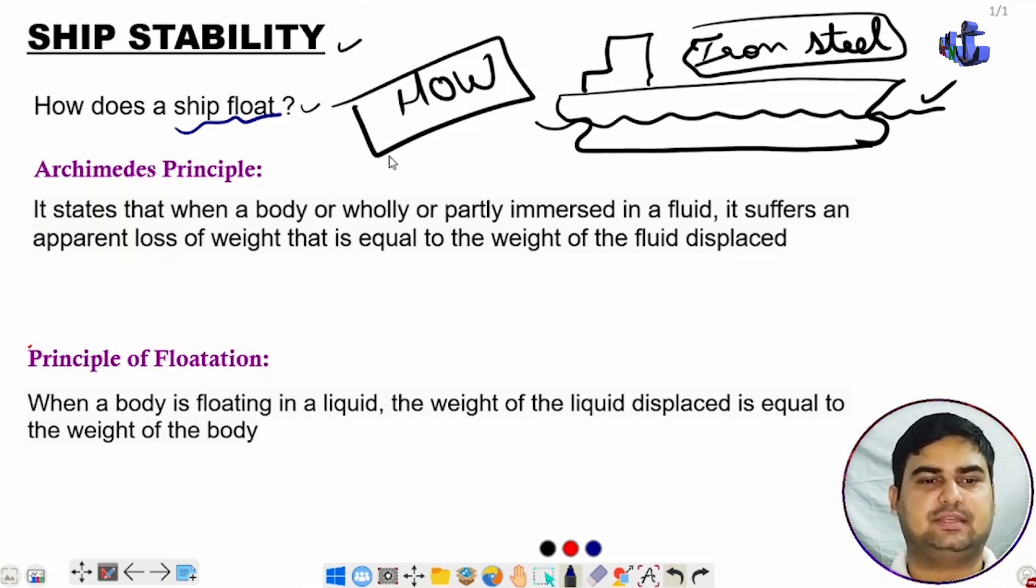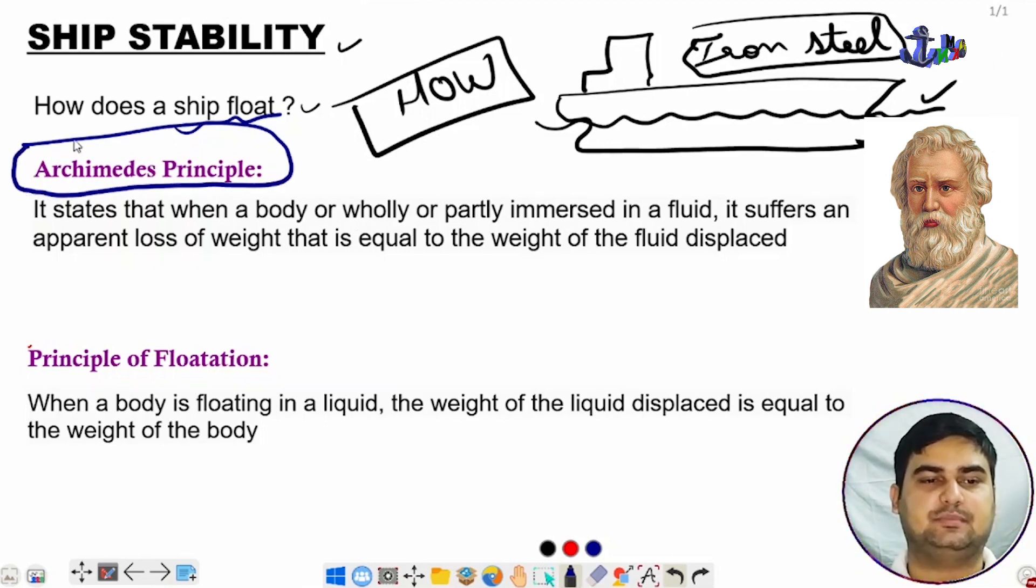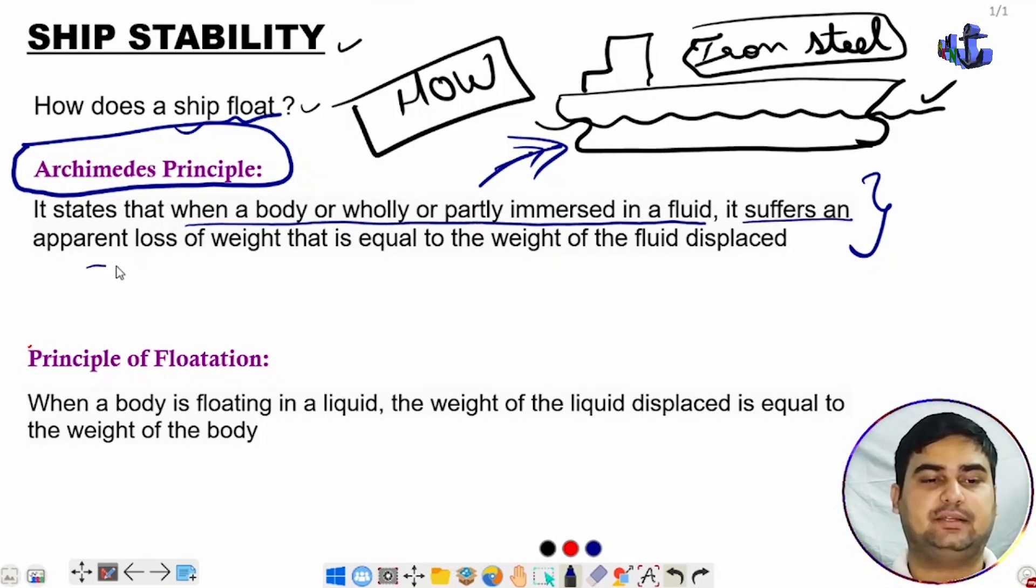The first time the law of flotation was given by physicist and mathematician Archimedes. This Archimedes principle is what the whole story is based on. He states that when a body is wholly or partly immersed in a fluid, it suffers an apparent loss of weight that is equal to the weight of the fluid displaced.